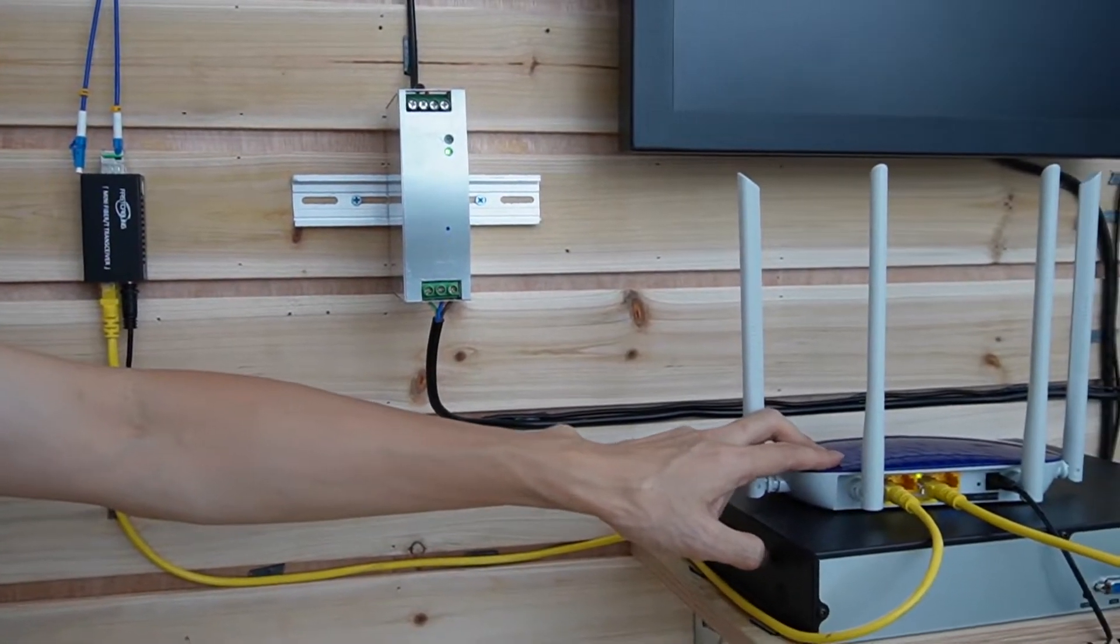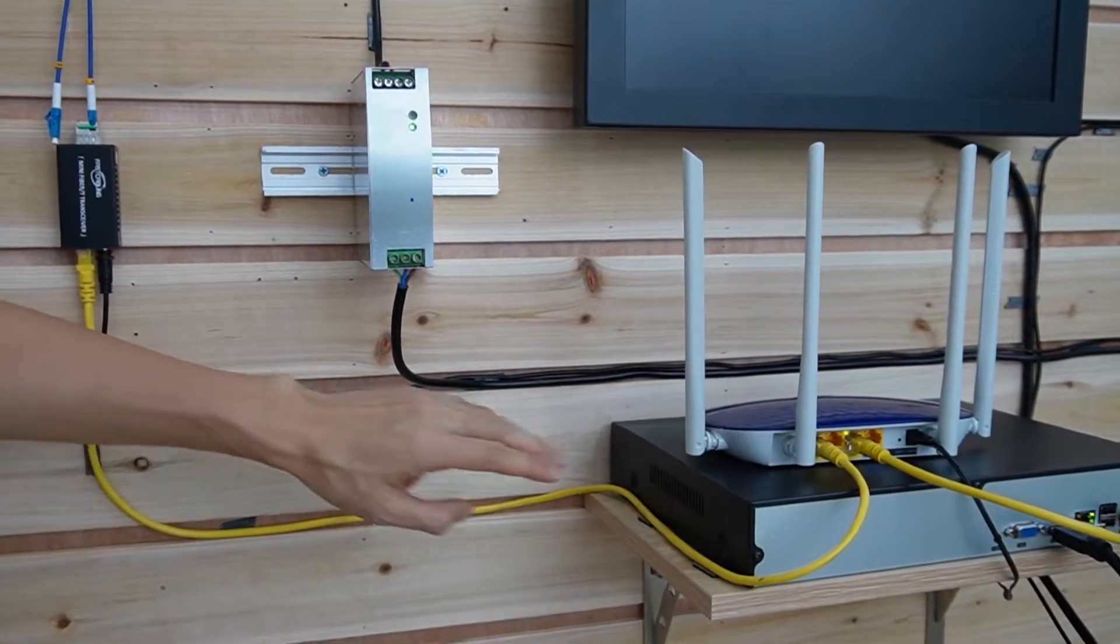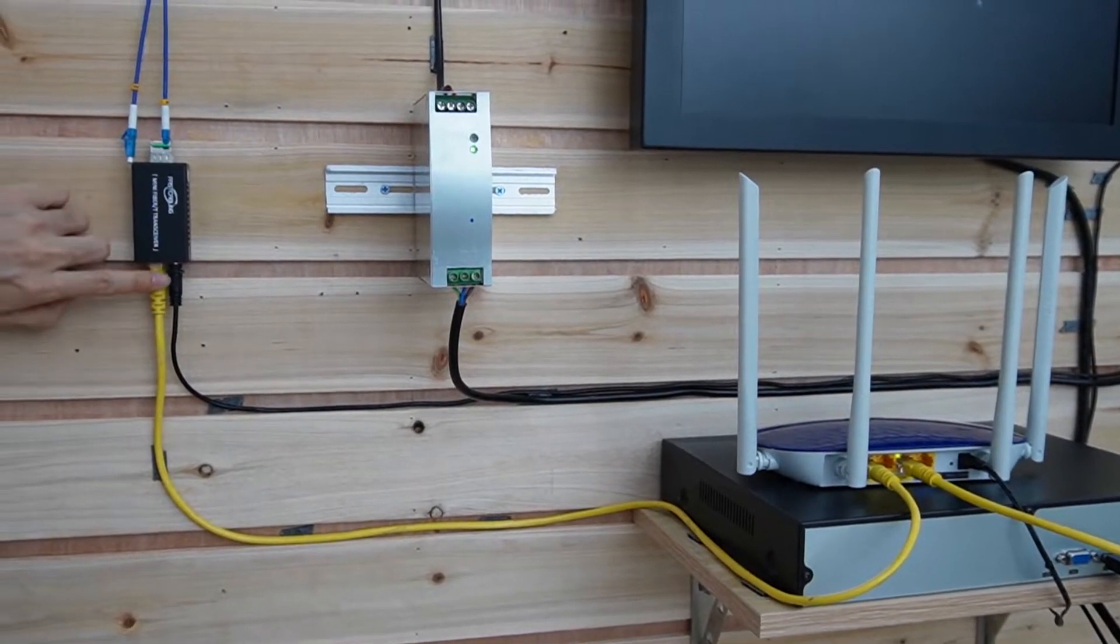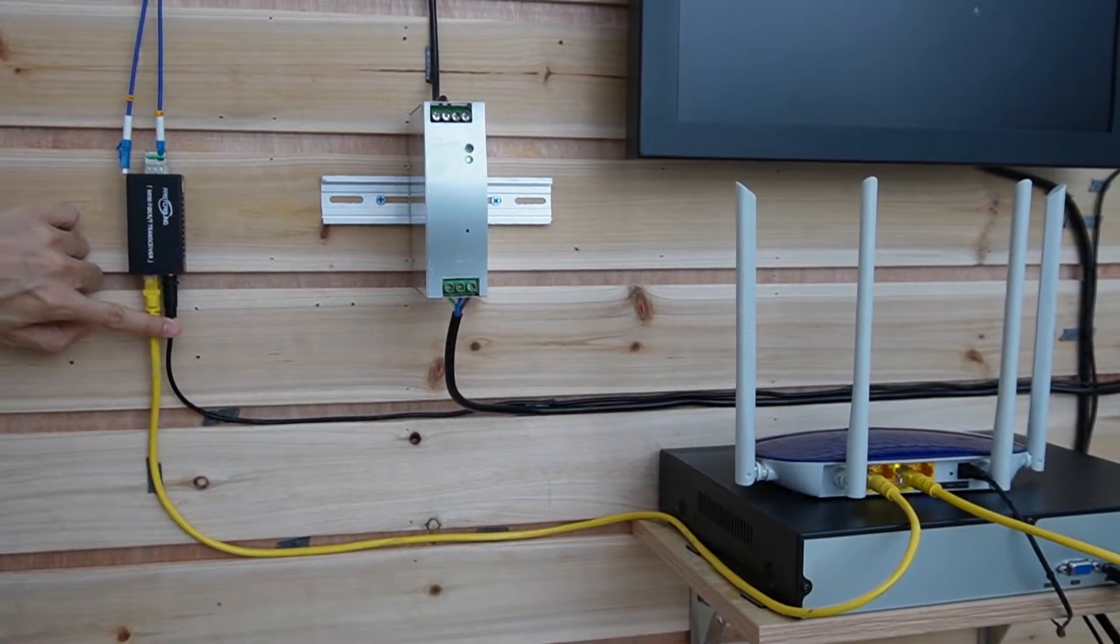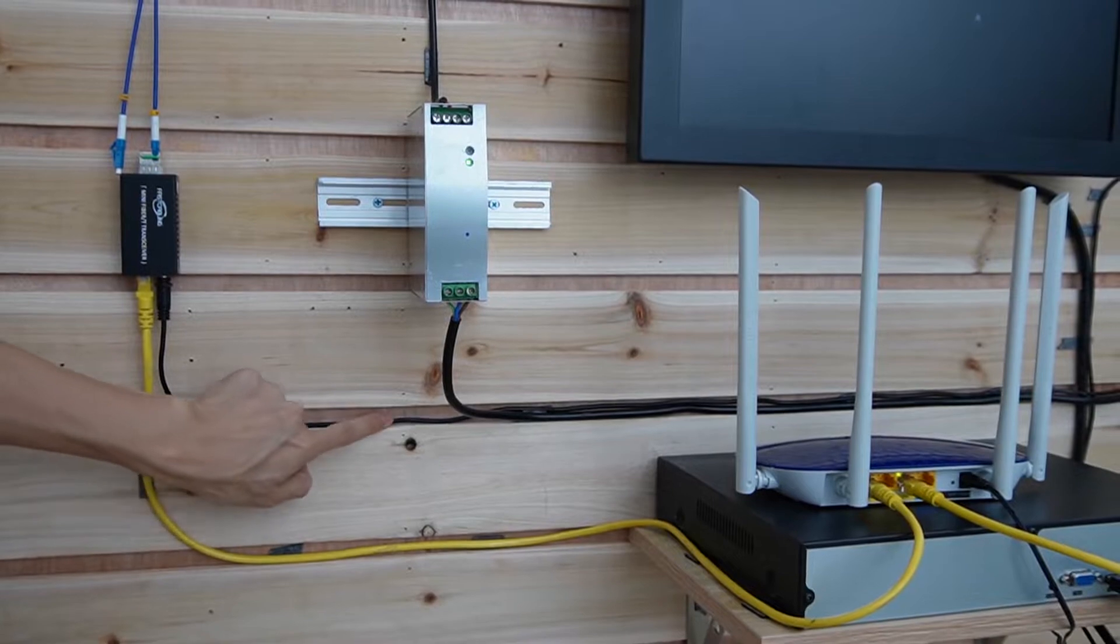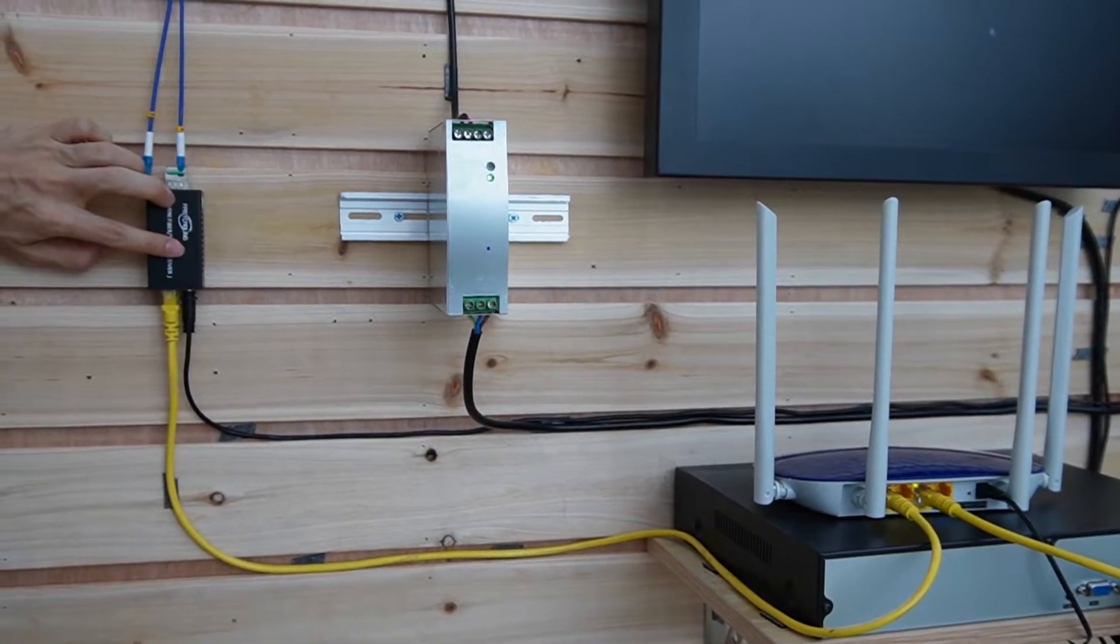This is the router, we got the Ethernet accessing from this router. And the medial converter also needs the power. So you can have the power source from the center, but it's quite easy. This is DC top voltage.